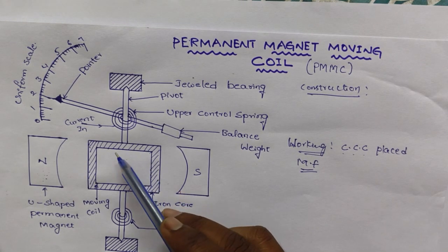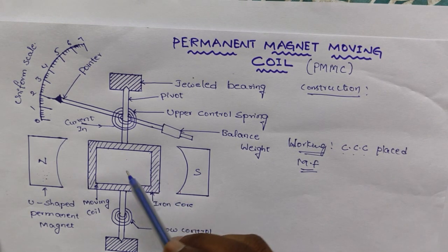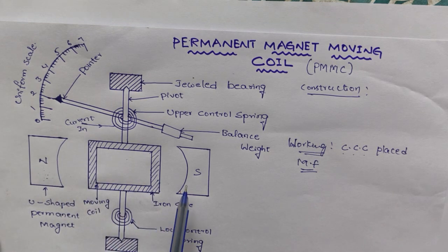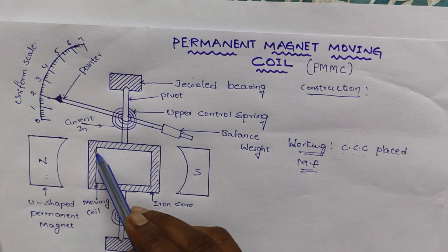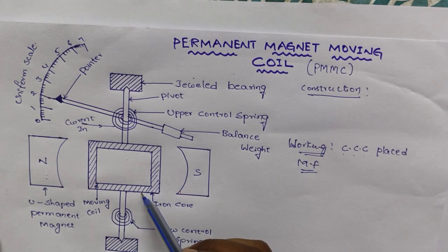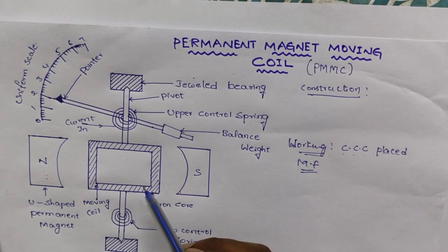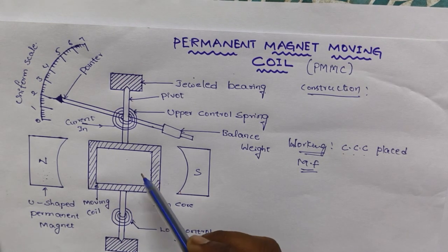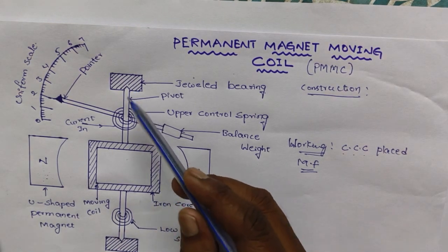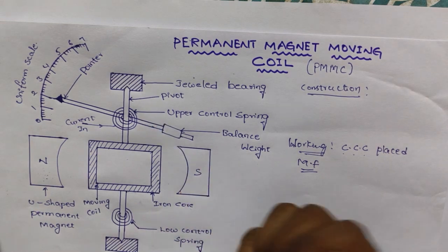Moving coil, this moving coil freely moves between permanent magnets. The coil wound with many turns of copper wire and is placed on rectangular aluminum which is pivoted on jewel bearings. These two are the bearings.